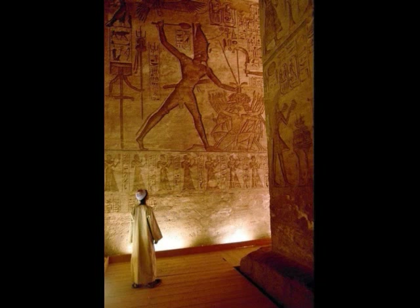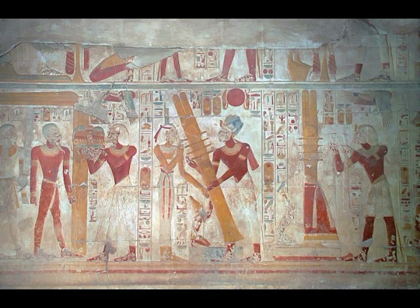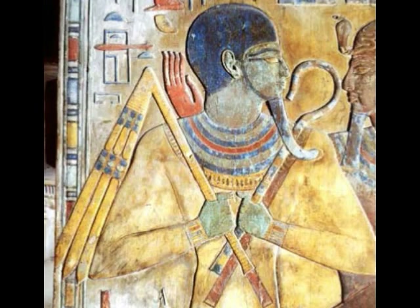These were frequently combined in inscriptions and often appear on sarcophagi together in a group or separately. In the case of each of these, the form represents the eternal value of the concept: the Ankh represented life, the Djed stability, the Was power.